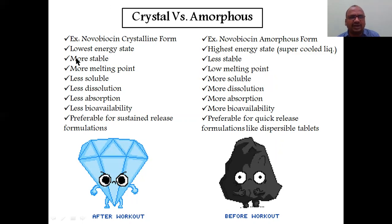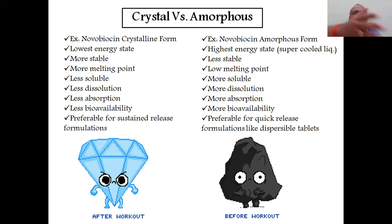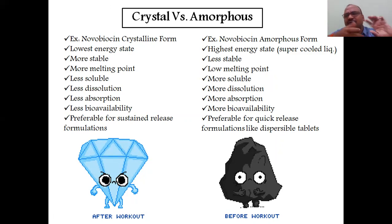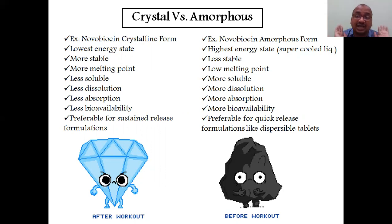Since the crystalline form is more stable, you cannot melt it easily — it requires a high melting point. Like a diamond, you cannot break or melt it easily. So it has a high melting point, is less soluble — you cannot dissolve it easily — and thus shows less dissolution.